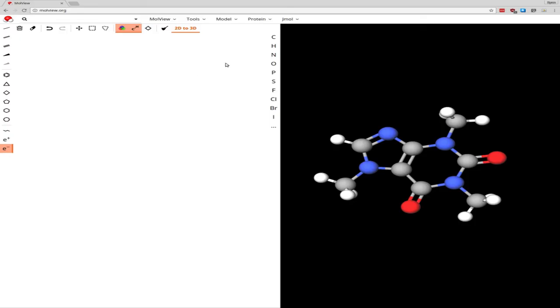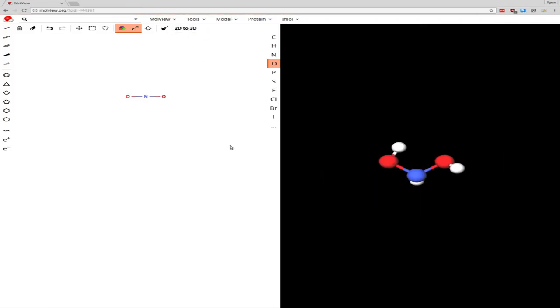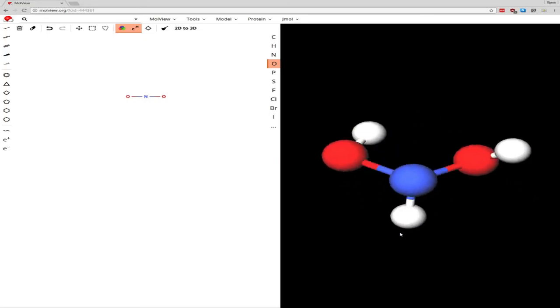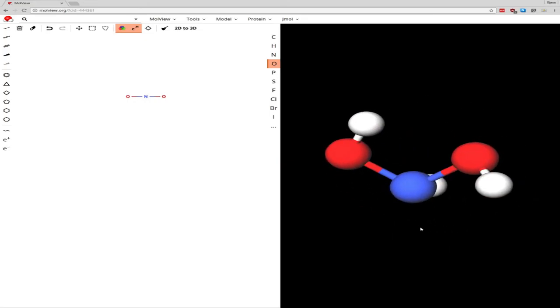Let's go ahead and look at some of our Lewis structures. One thing we had was nitrite. So we had nitrogen with two oxygens attached to it. And we can go to 2D to 3D over here. And that will cause nitrite to pop up in the renderer. You can use your mouse wheel to scroll in or out, and then you can rotate it around with your cursor.